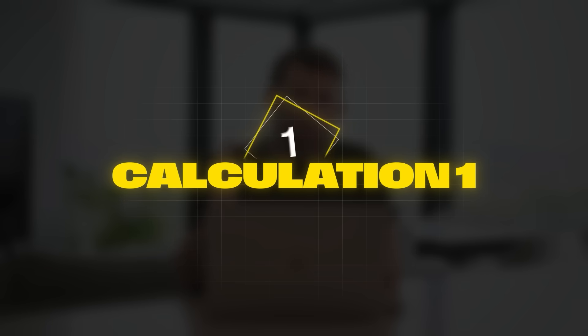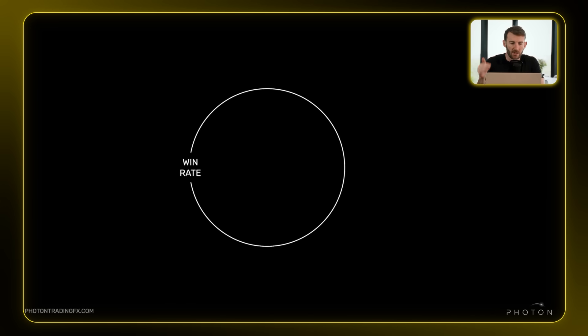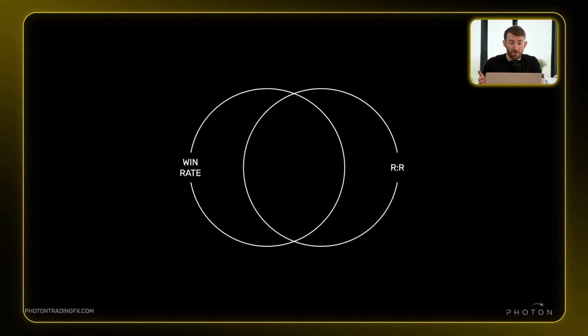So let's start with calculation number one. Most traders focus on the wrong thing. They're trying to chase really high 60, 70, 80% win rates, or the other half are trying to bank those huge risk reward trades — going for 10, 15R and trying to bank those massive but infrequent winners. But it's the combination of both of these metrics you want to focus on, because that tells you your expectancy.